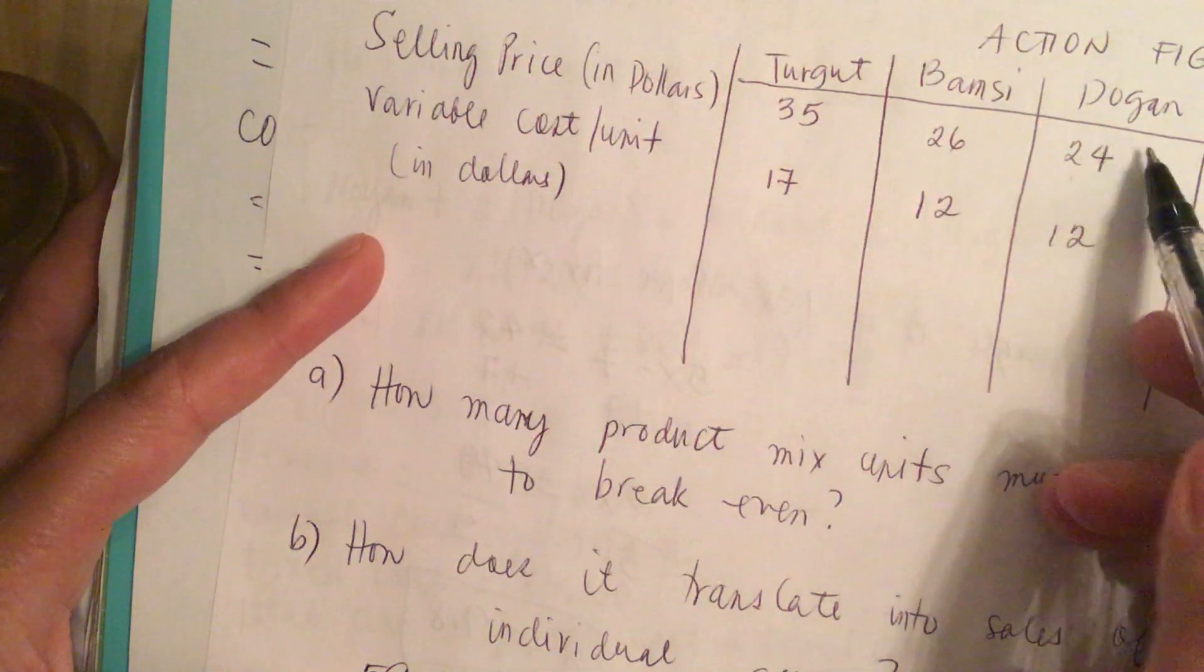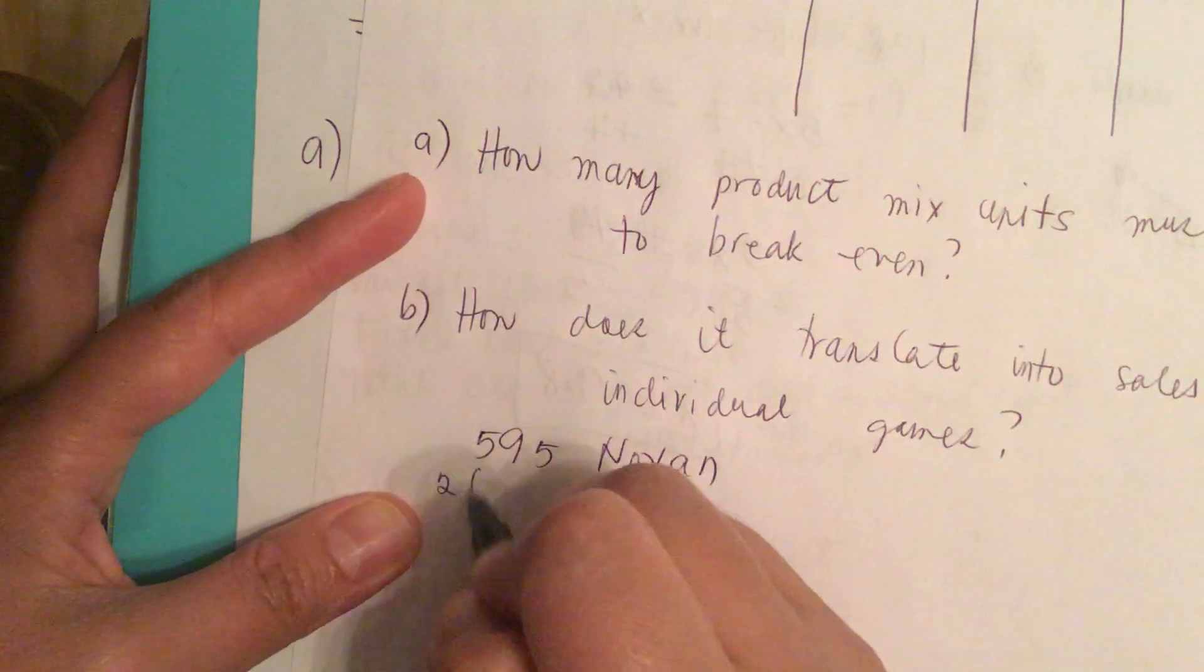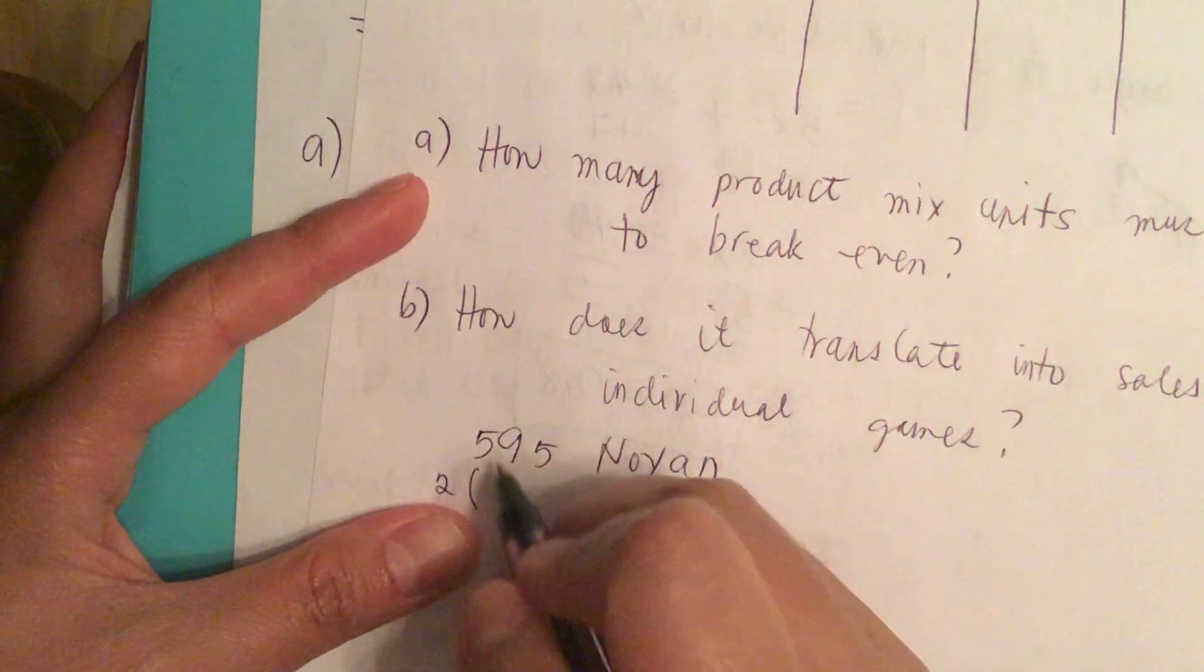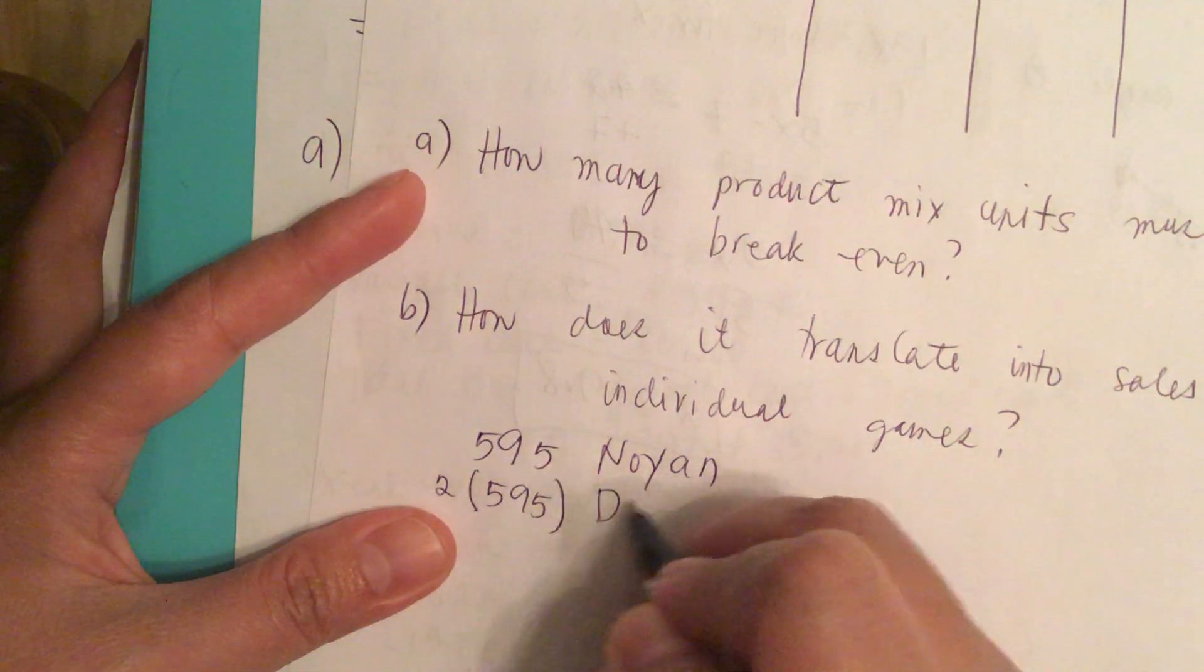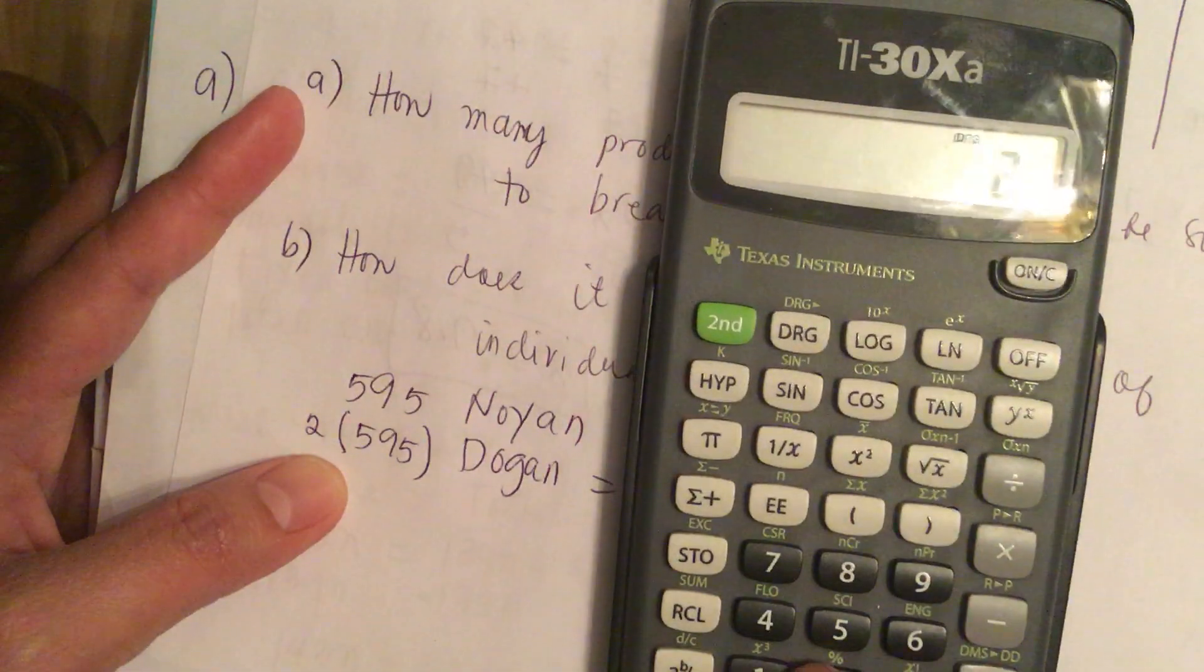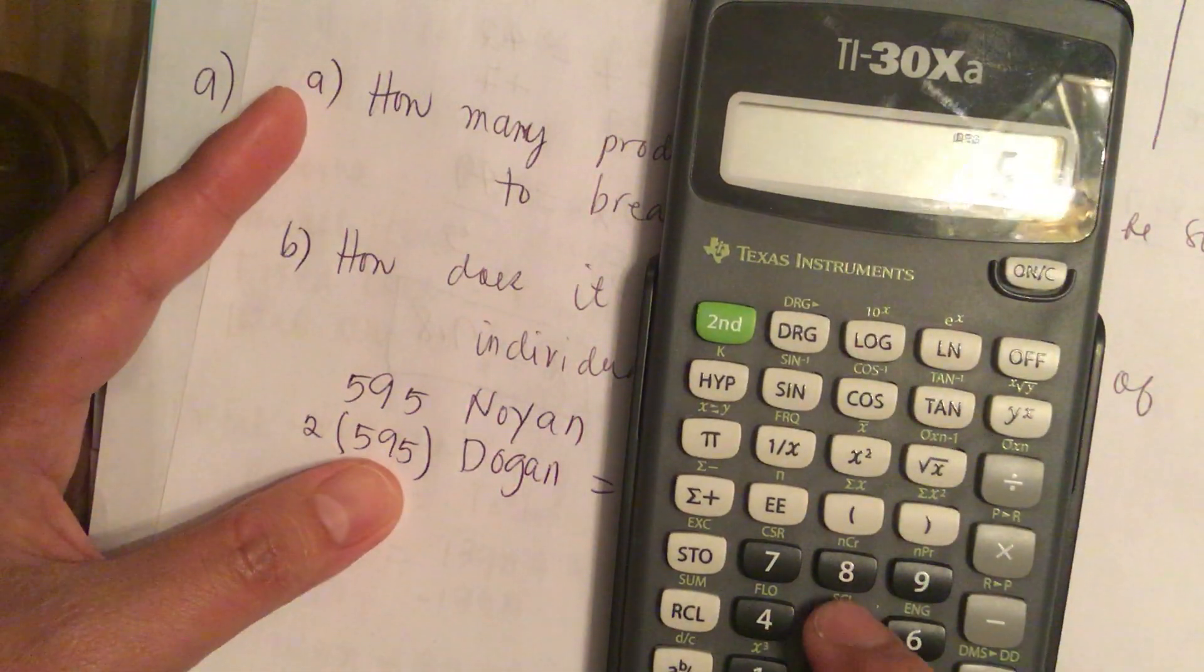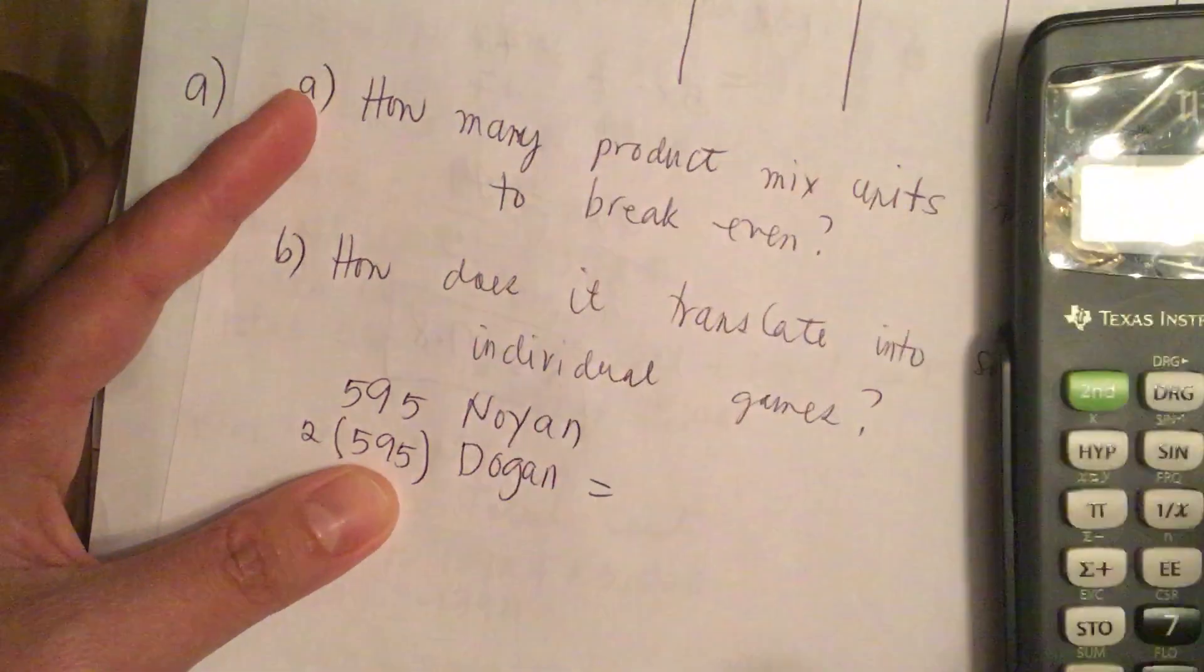For Dogan, it's 2 times this. So 2 times 595 is equal to 1,190.